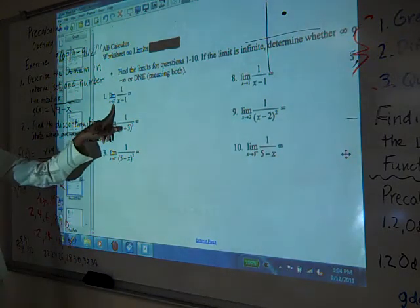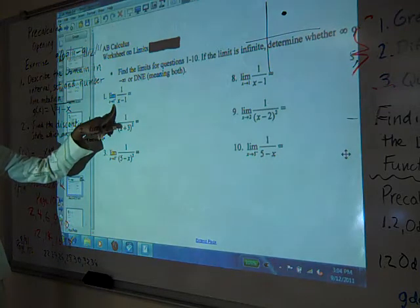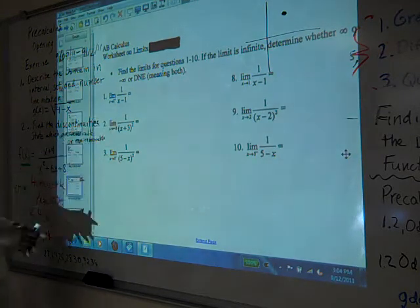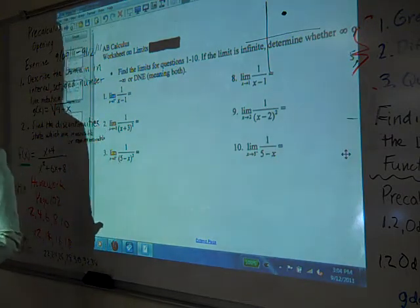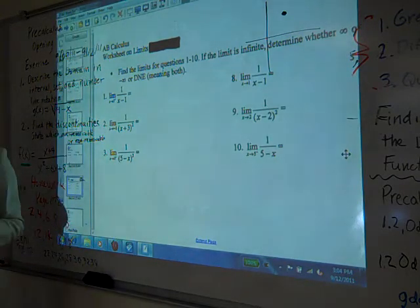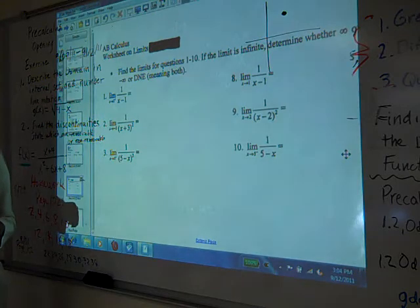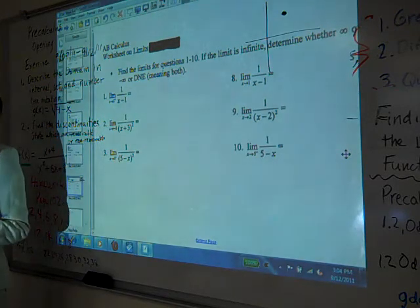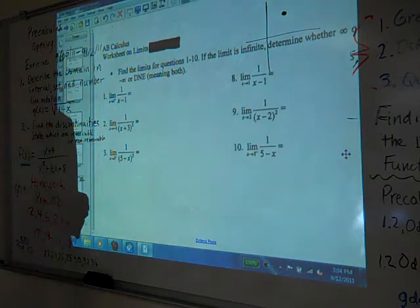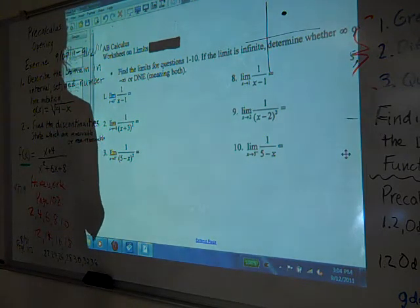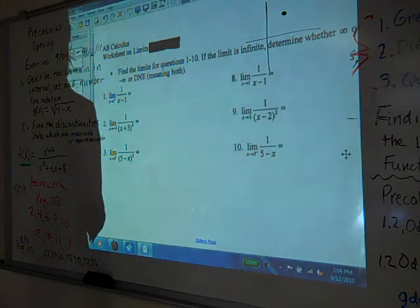This says I want the limit as x approaches 1, what does that little plus mean? Right side. From the right side of this expression. I'm still going to do the same first step. What is my first step that I do? Not yet. What's the first step, first strategy for finding a limit? That's not the first strategy.